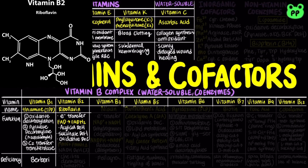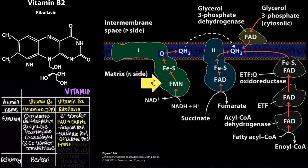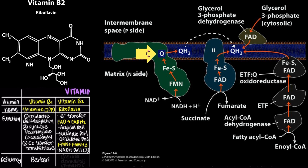Another important derivative of vitamin B2 is flavin mononucleotide, abbreviated as FMN. FMN is a prosthetic group of complex I of the electron transport chain, also known as NADH dehydrogenase, in which the oxidation of NADH to NAD+ is coupled to the reduction of FMN to FMNH2. The electrons in FMNH2 subsequently pass into the iron-sulfur center, then to coenzyme Q, generating free energy that pumps four protons out of the inner mitochondrial membrane, later harvested by ATP synthase through oxidative phosphorylation.